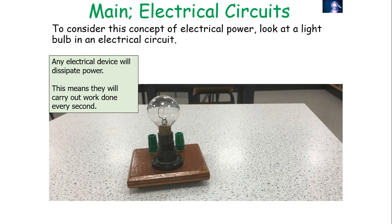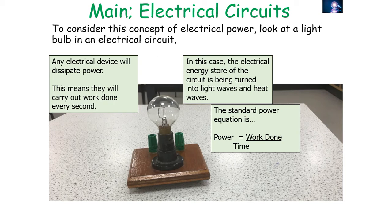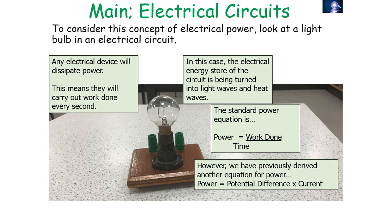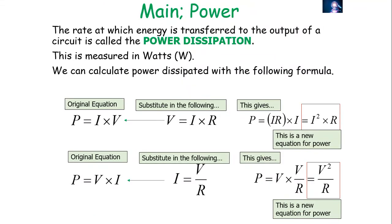Consider a device like a light bulb. Any electrical device will dissipate power — it carries out work done every second. Work done means energy changing from one store to another: in this case, the electrical energy store of the circuit is converted into light waves and heat waves, which are radiated off the bulb. The standard power equation is power equals work done over time, and we've also established that power equals potential difference times current.